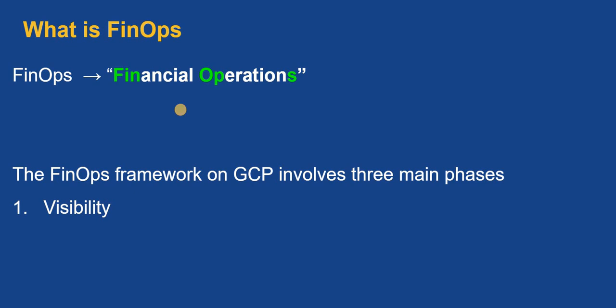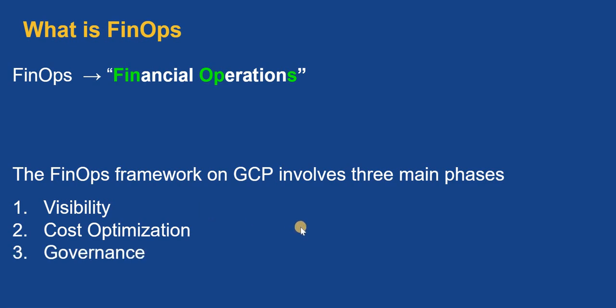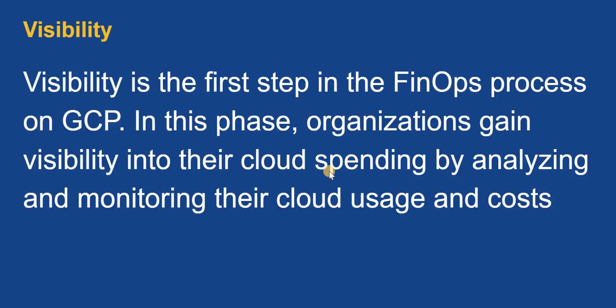The three main phases are: first, visibility — visibility on your cost and cloud spending; second, cost optimization — once you have visibility, you identify what resources you are over-utilizing or under-utilizing and reduce cost accordingly; and third, governance — a set of policies to reduce your cost and maintain security.